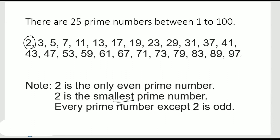And every prime number except 2 is odd. If you notice here, see 3, 5, 7, 11 — the unit's digit will be 1, 3, 5, 7, or 9. So these are all odd numbers. So every prime number except 2 is odd.